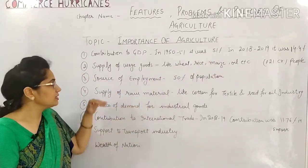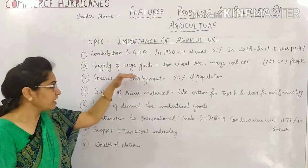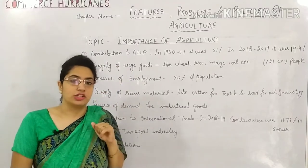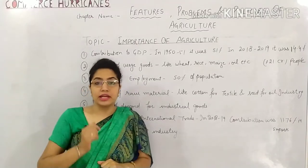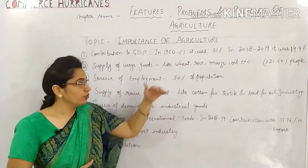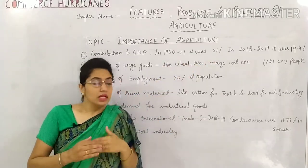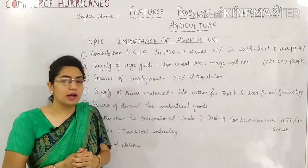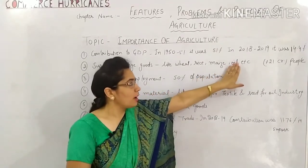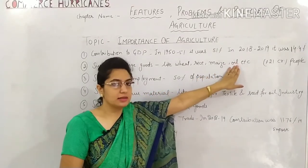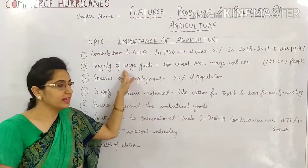Point number two is Supply of Wage Goods. Wage goods means important and essential products which are very important for your livelihood, like wheat, rice, maize, oil, etc. These are things you get from agriculture. If you need oil, you get it from seeds, and seeds come from agriculture.